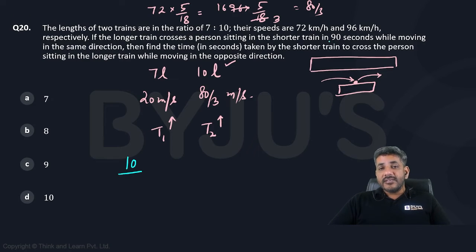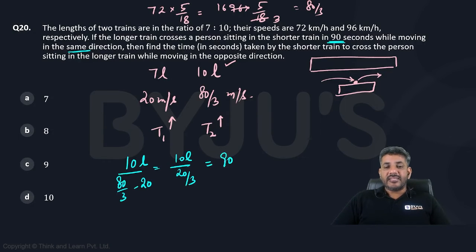He says it covers in 90 seconds moving in same direction. Same direction means speed would be 80 by 3 minus 20. So this gives me 10L divided by 80 by 3 minus 20 is 20 by 3 and the time taken in this case is 90 seconds. So can't I calculate L from here? It is 90 into 20 by 3 which is equal to 600 and 600 by 10. So I can say the value of L is equal to 60.